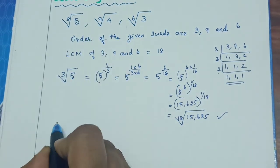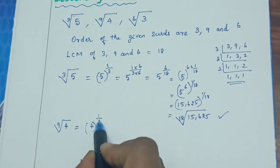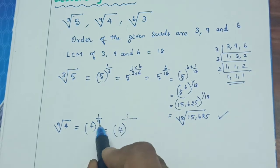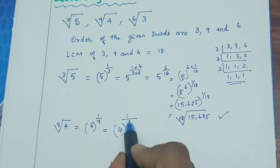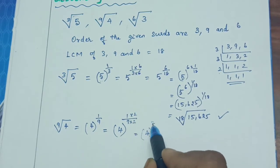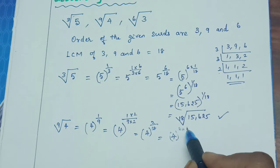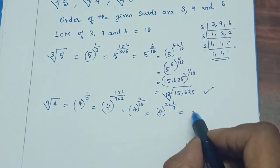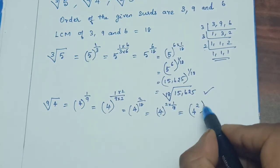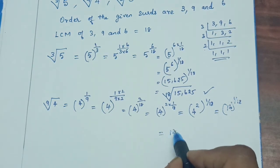Next, take the 9th root of 4. In fractional index form: 4 to the power 1 by 9. The LCM is 18. To make the denominator 18, multiply by 2: 1 into 2 by 9 into 2 gives 2 by 18. So we get 4 to the power 2 by 18, which is 4 to the power 2, the whole raised to 1 by 18. That is 4 squared to the power 1 by 18, so 16 to the power 1 by 18.